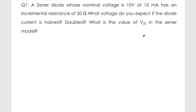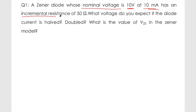This is a simple problem involving the Zener diode equation: vz equals vz0 plus iz times rz. We just need to solve this equation carefully, being aware of the terminologies. 'Nominal voltage' means 10 volts at 10 milliampere, and 'incremental resistance' is another term used for rz. These are the terminologies you should be familiar with.